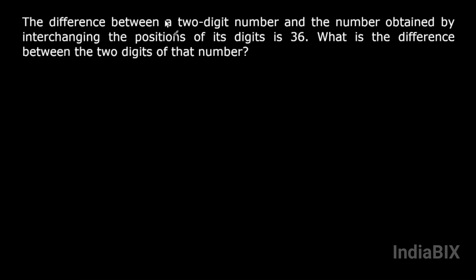The difference between a two-digit number and the number obtained by interchanging the positions of its digits is 36. What is the difference between the two digits of that number?